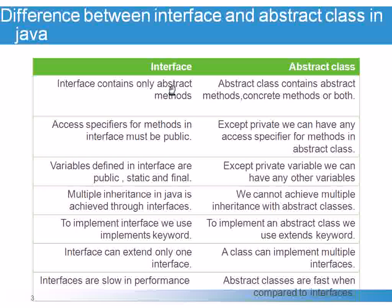Second difference: Interface contains only public methods, but abstract class can contain any methods except private methods.